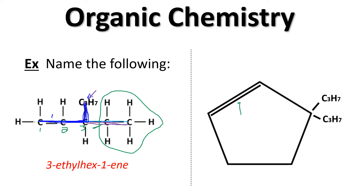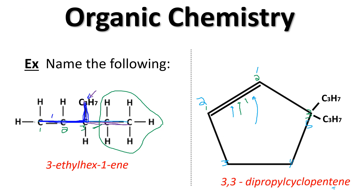Now there's a ring structure with a double bond. We want the multi-bond to have the lowest number possible, so we consider where substituent groups are. The double bond must be in the first bonding spot, meaning one corner carbon is carbon one and the adjacent one is carbon two. The numbering direction that places the substituents on carbon three (rather than carbon five) is correct. With five carbons in the ring, this is cyclopentene, and with two propyl groups on the third carbon, the full name is 3,3-dipropylcyclopentene. The number one is unnecessary since the double bond is always in the one spot for cycloalkenes.